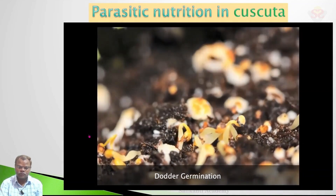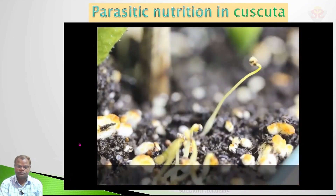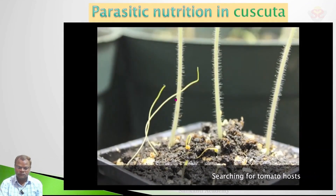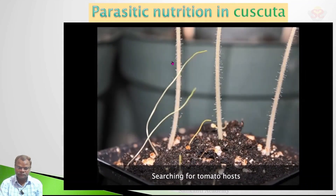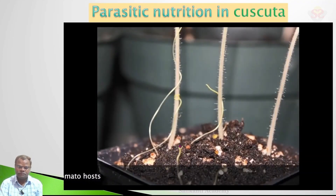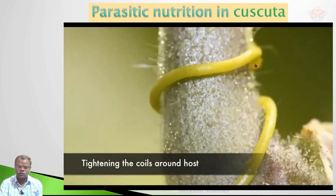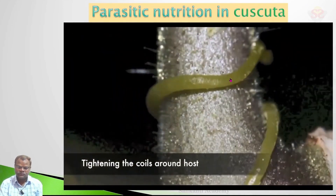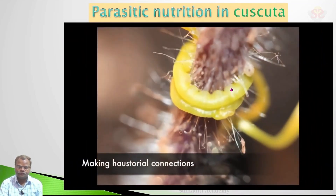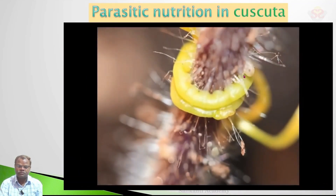Parasitic nutrition in Cuscuta: the Cuscuta plant germinates, and after germinating, the Cuscuta stem flutters around the host plant stem. Cuscuta produces small root-like structures called haustoria, and these haustoria penetrate into the host stem. By means of these haustoria, they collect their nutrients from the host plant.